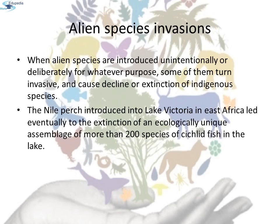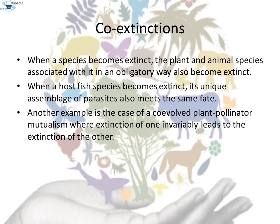Third: alien species invasions. When alien species are introduced unintentionally or deliberately, some of them turn invasive and cause decline or extinction of indigenous species. The Nile perch introduced into Lake Victoria in East Africa led eventually to the extinction of an ecologically unique assemblage of more than 200 species of cichlid fish in the lake. Fourth: co-extinction. When a species becomes extinct, the plant and animal species associated with it in an obligatory way also become extinct. When a host species becomes extinct, its unique assemblage of parasites also meets the same fate. Another example is co-evolved plant-pollinator mutualism, where extinction of one invariably leads to the extinction of the other.